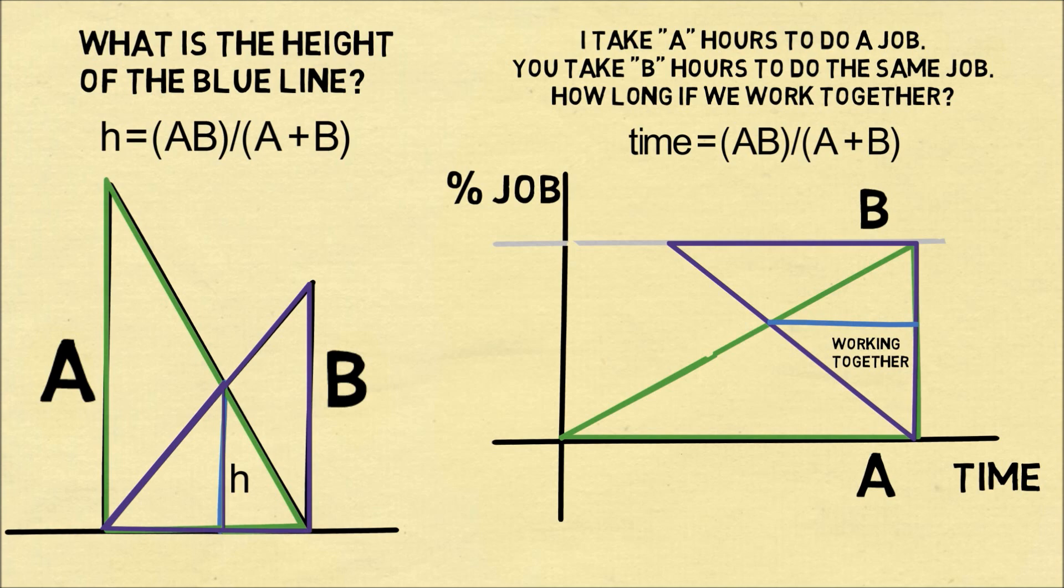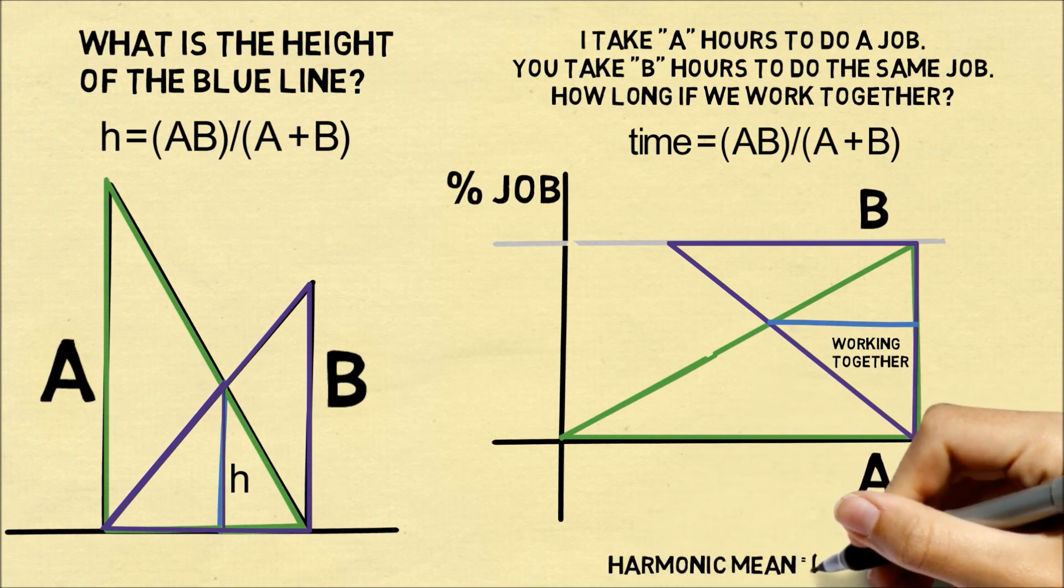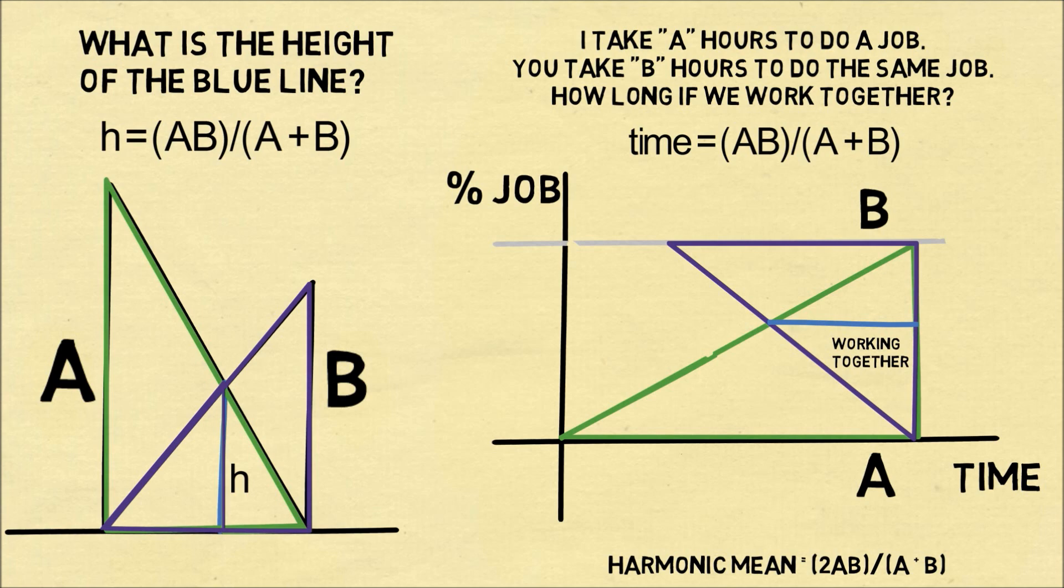And that's pretty neat. These two problems are related. On a concluding note, the harmonic mean is equal to 2 times ab over a plus b. And both of these problems are equal to half of the harmonic mean.